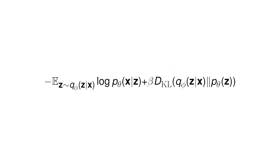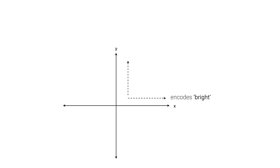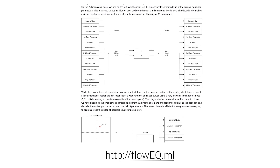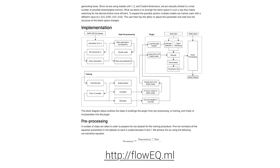Finally, we make one further adjustment: we adjust the relative weights of the reconstruction and KL losses. This factor, known as beta, allows us to control the disentanglement within the latent space. Greater disentanglement means we are closer to encoding a single property along a single dimension of the latent space. For more details on the math and intuition behind the VAE, make sure to check out the project website.